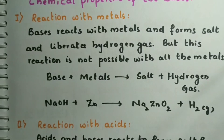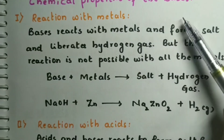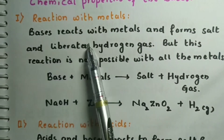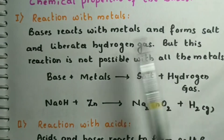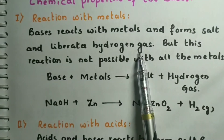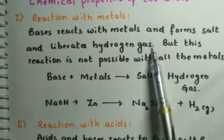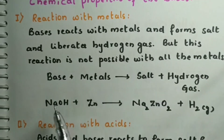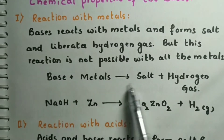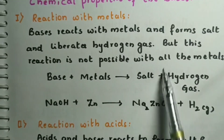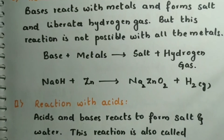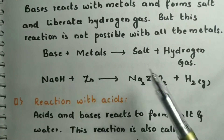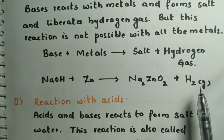Now let us learn the chemical properties of bases. When a base reacts with a metal, it forms salt and liberates hydrogen gas — but this reaction is not possible with all metals, only a few. For example, sodium hydroxide reacts with zinc to form sodium zincate and hydrogen gas.